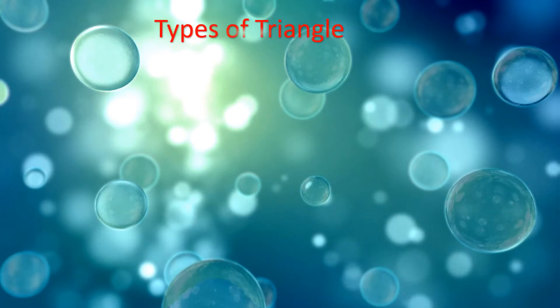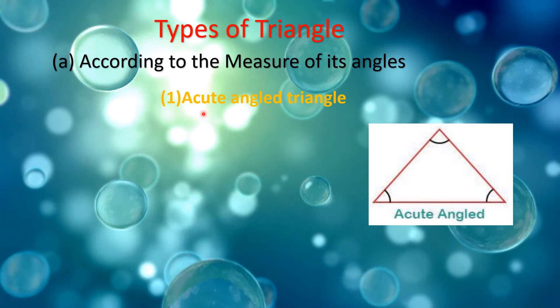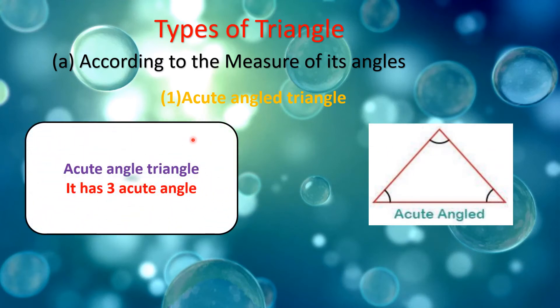Now, types of triangle according to the measure of each angle. One: acute-angled triangle. An acute-angled triangle has three acute angles.